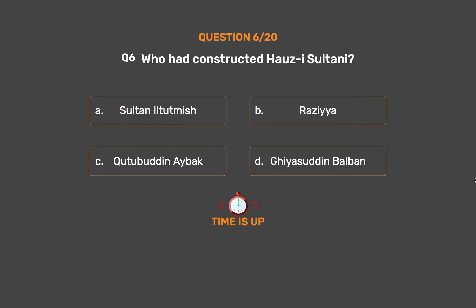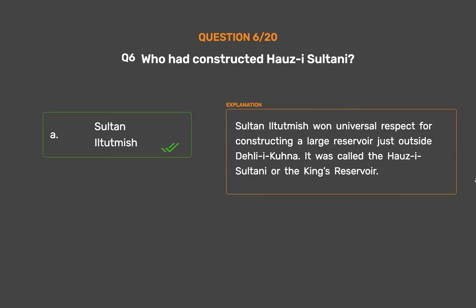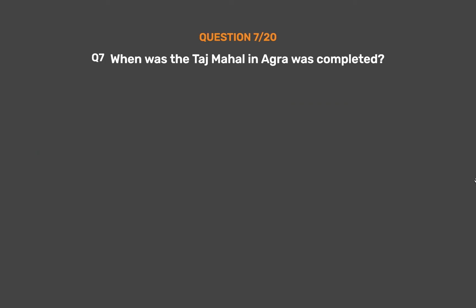The correct answer is Option A: Iltutmish. Iltutmish won universal respect for constructing a large reservoir just outside Delhi. It was called the Hauz-i-Sultani, or the King's Reservoir.